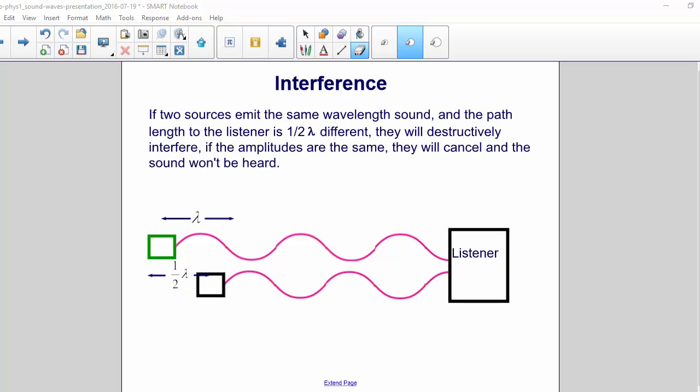And if the two sources emit the same wavelength sound, and the path length to the listener is half of a wavelength different, they will destructively interfere.